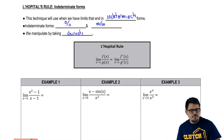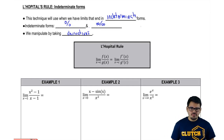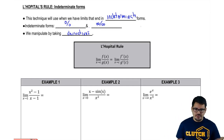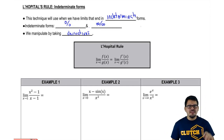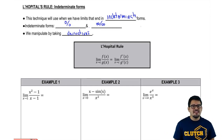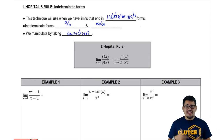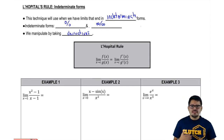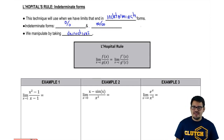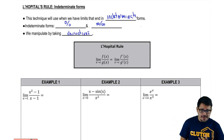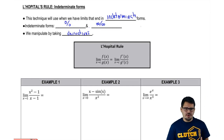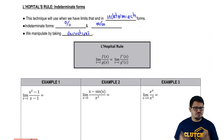L'Hôpital's rule, which is what we call this type of solution, is not very hard. It just requires care about what type of indeterminate form you're in and making sure you get out of it. There are a lot of different types of indeterminate forms, and I want to make sure you guys are prepared for every type of problem. So let's go ahead and look at Example 1.